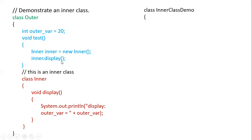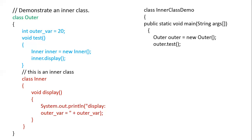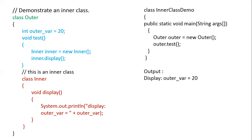In another class where we define the main function, we create an object of the outer class and using this object we invoke the test method. This test method creates an object of the inner class and using that object calls the display method, which prints the value of outer_variable. This will be the output of the program when executed.